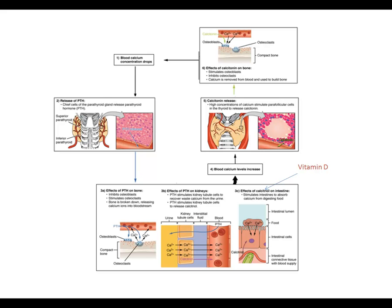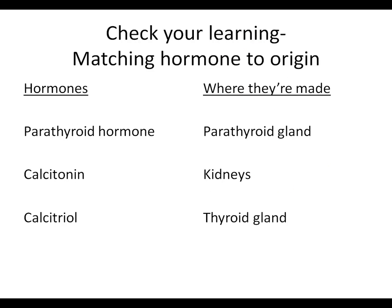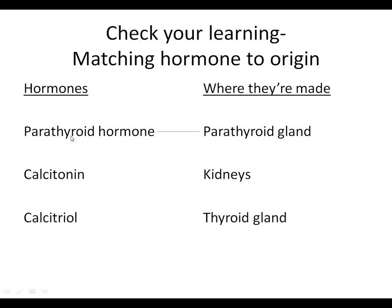There are a lot of facts here, and this diagram summarizes everything about calcium homeostasis. Take a minute to learn as much from this figure as you can, and then there's a short self-test to rehearse these facts. Let's start with where these hormones are made: parathyroid hormone is made by the parathyroid gland, calcitonin is made by the thyroid gland, and calcitriol is made by the kidneys.